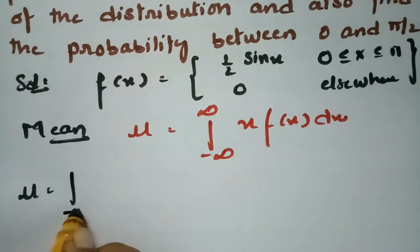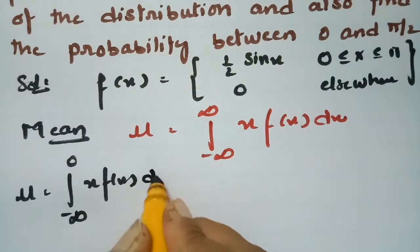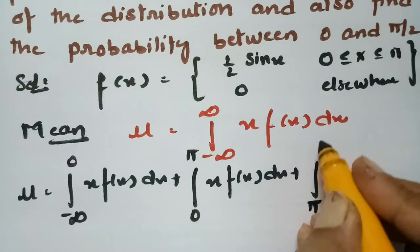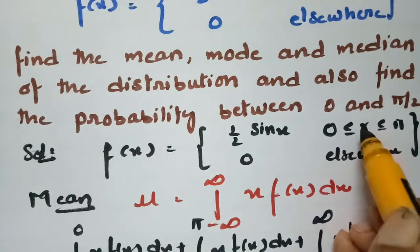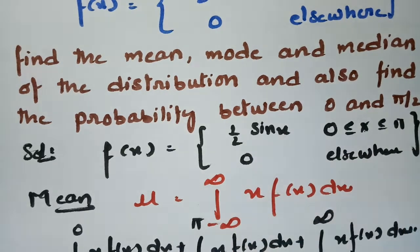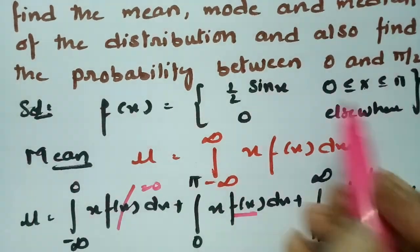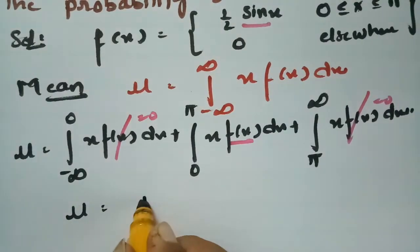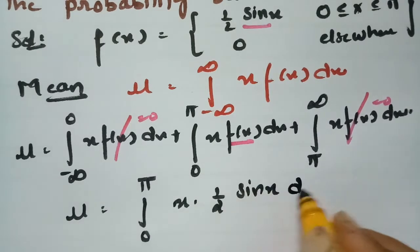Splitting the integral: from minus infinity to 0, plus 0 to π, plus π to infinity of x·f(x) dx. Since f(x) = (1/2)sin(x) only between 0 and π and is 0 elsewhere, the outer integrals vanish. So μ = integral from 0 to π of x·(1/2)sin(x) dx.